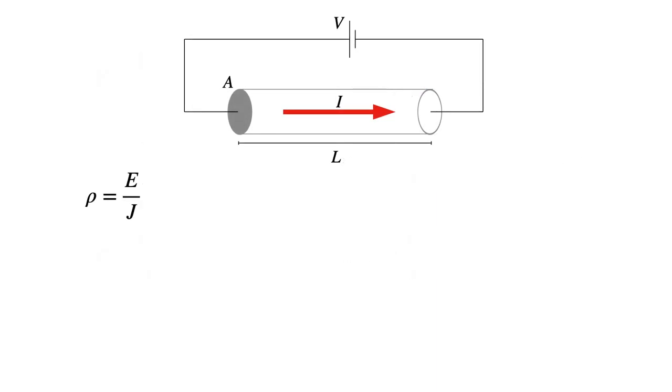Here we have that definition of electric field over current density. Keep in mind that those quantities are actually vectors. I've just looked at them as magnitudes to keep it simple. The electric field will be moving from the positive terminal to the negative terminal.